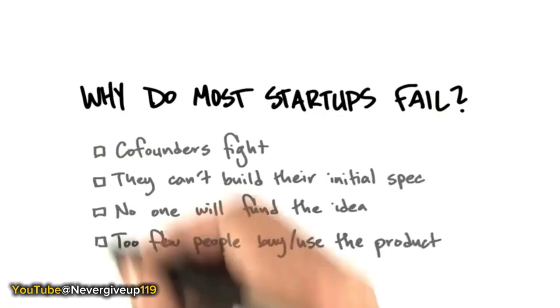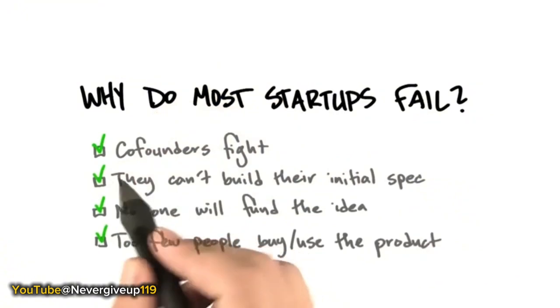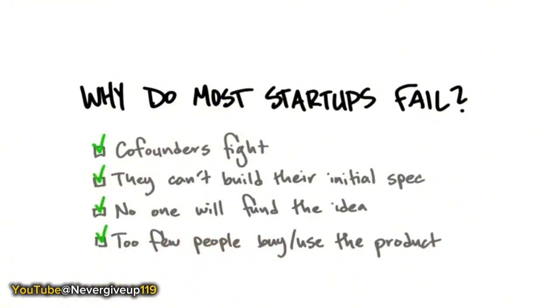So why do startups fail? The answer is really all of the above. Co-founders do fight. Somewhere between a quarter and a third of startups never even get to the beginning because the founders just couldn't agree. Two is that sometimes your vision is just too far in advance to actually be built. Or three, it's such an interesting vision or such a bad vision, but it can't attract sufficient capital to get started. And the one we'll be talking about in some detail is that you never actually found product market fit. Too few people will buy or will use the product.